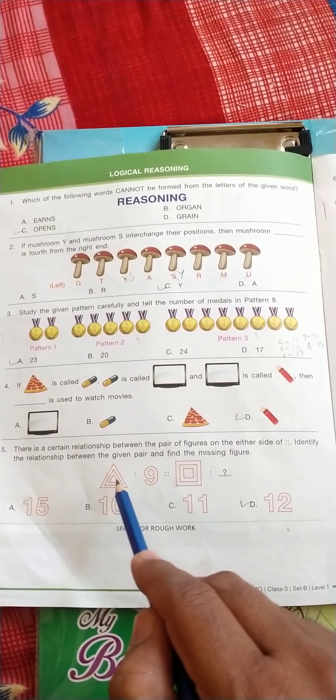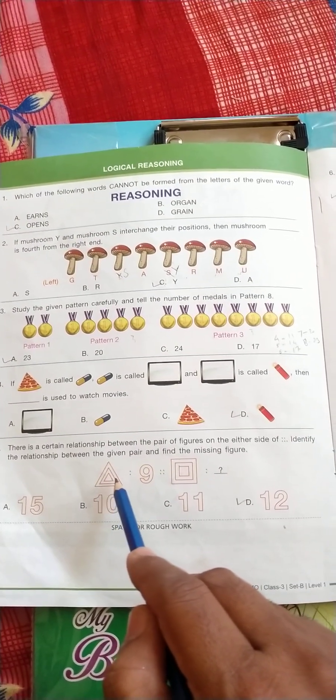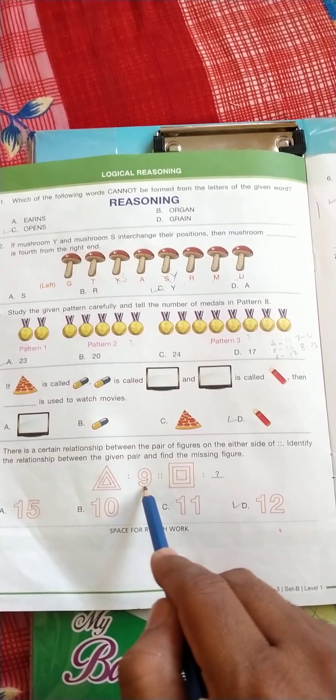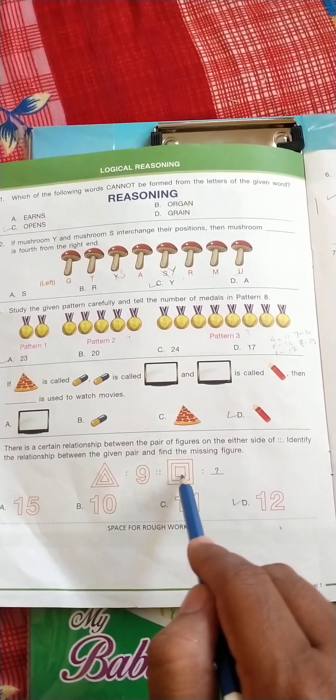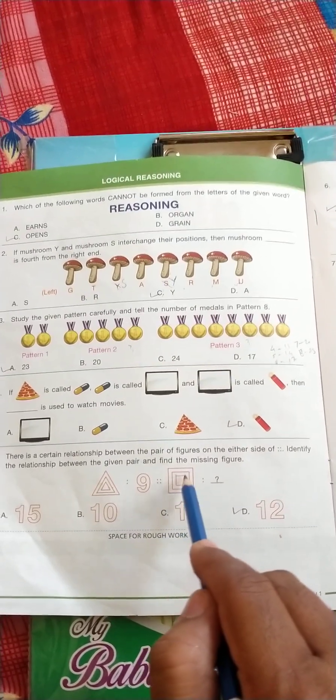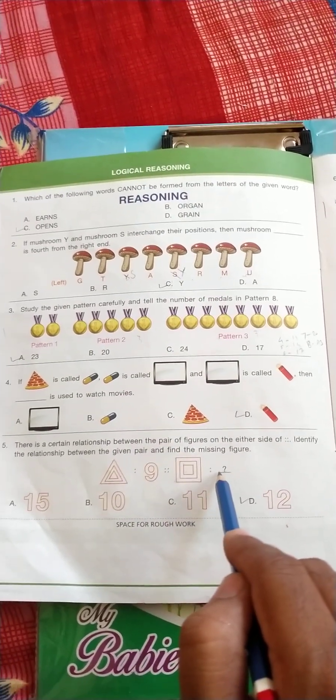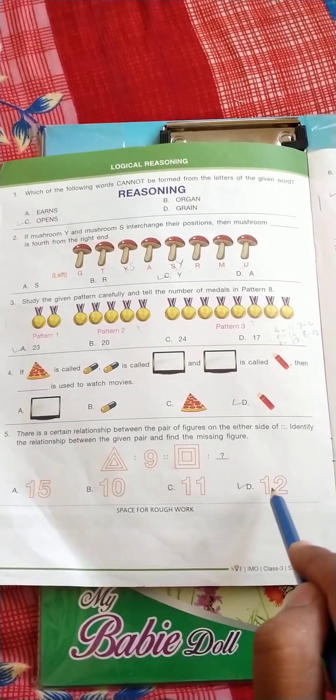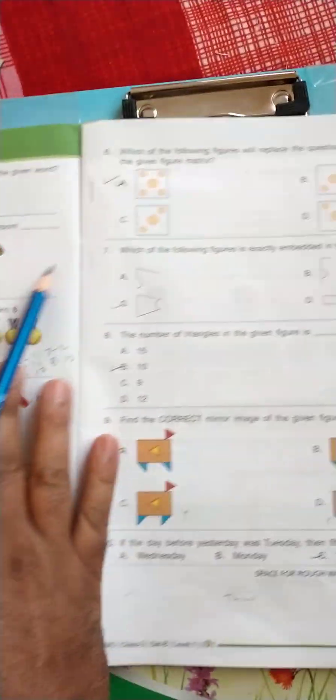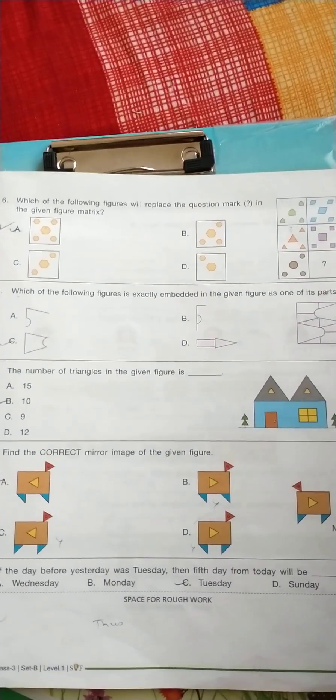So here there is three triangles and nine, so three times three is nine. So here is a square, so means four lines, so four threes are twelve. So the correct answer is D, twelve.